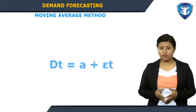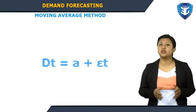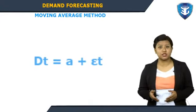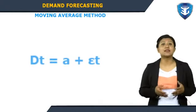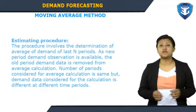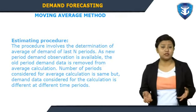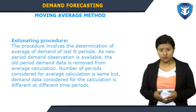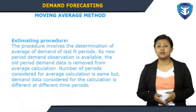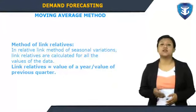The moving average method is used to represent a demand process where demand is represented as a level with random noise. Parameter A is not really known and is subject to random changes over time. Using the simple moving average procedure, we can get an estimate for A that is updated as time progresses. The procedure involves calculating the average demand of the last N periods; as a new period's demand observation becomes available, the oldest period is removed from the calculation.